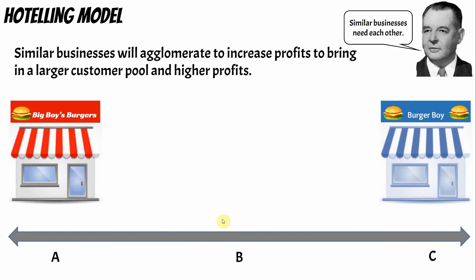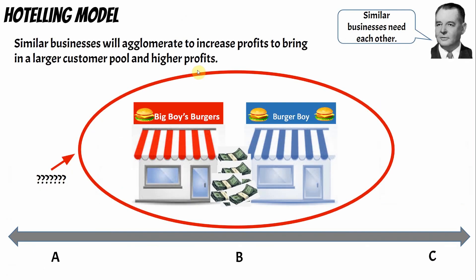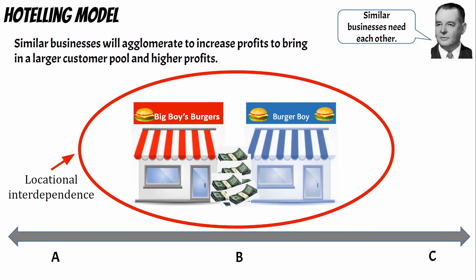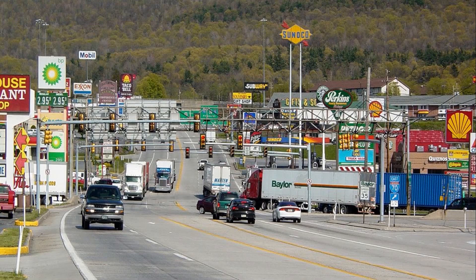The second industrial model is Hotelling's model, and everyone loves this one. Think about two burger restaurants — Big Boys Burgers and Burger Boy — at locations A and C. If they agglomerate, meaning move near each other, they can actually earn more money. Rather than stealing customers, they create centrality and magnetism around that location. We've all seen a highway exit with lots of gas stations, food, and hotels — that's locational interdependence. All of these places need each other. If one moves, they both suffer; if they move closer together, they both become much better.